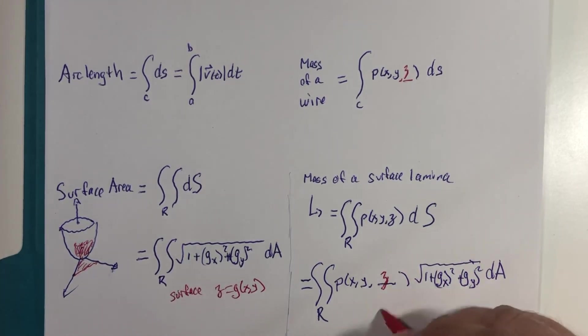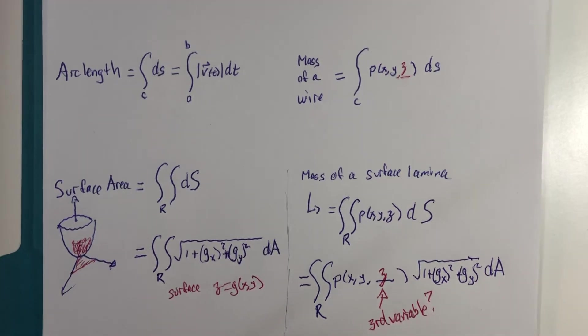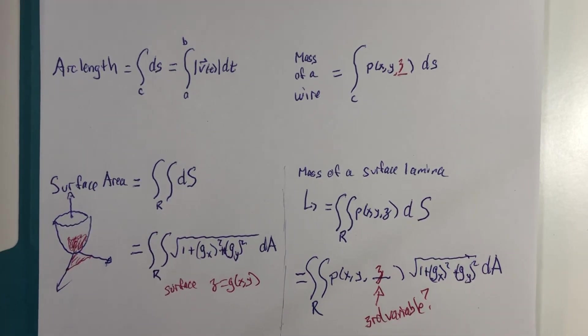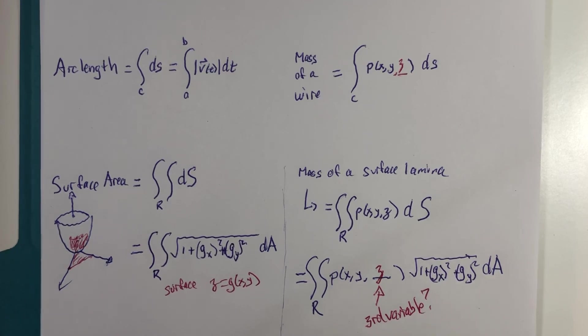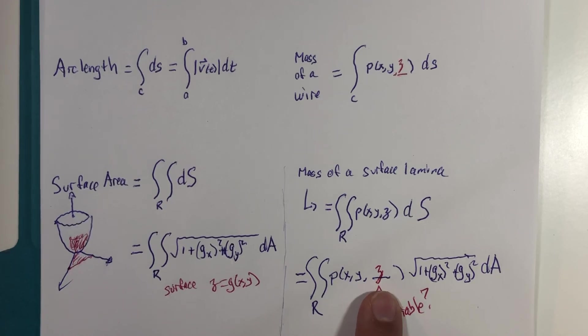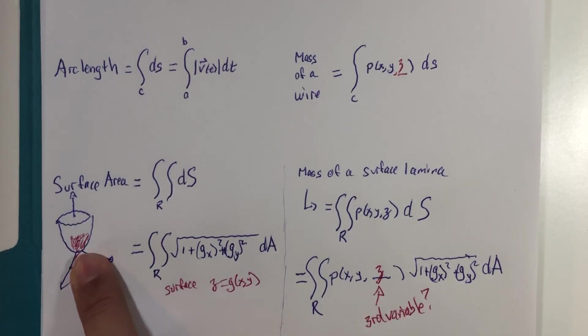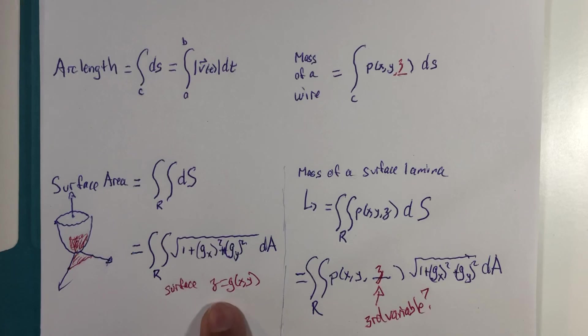And part of me just wants to jump out and tell you. And part of me wants to remind you of some things we've been doing with line integrals. We only care about the density of the surface itself. And we have a definition for this surface. What does z actually equal?